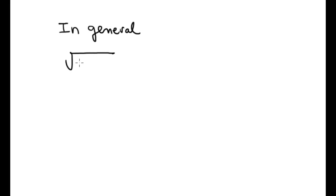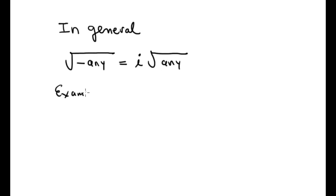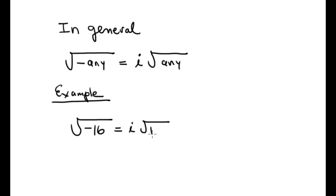Okay, in general, the square root of a negative number is equal to i times the square root of the positive number. For example, square root of negative 16 is i times square root of positive 16, which is 4. So the answer is 4i.